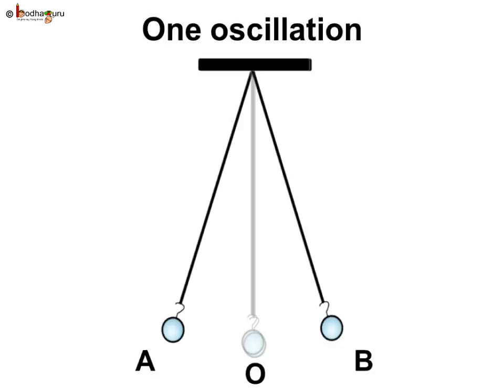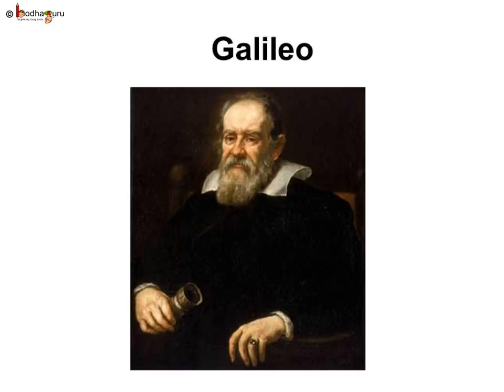Galileo, who was a European scientist, was the first to examine the unique characteristics of the pendulum that could be used to measure time. It is said that once Galileo was sitting in a church, he noticed that a lamp suspended from the ceiling with a chain was moving slowly from one side to the other.